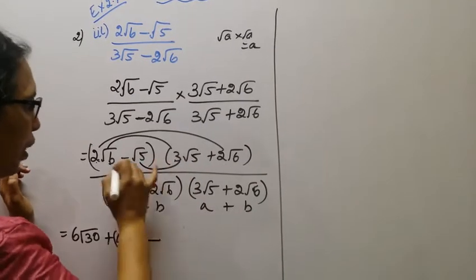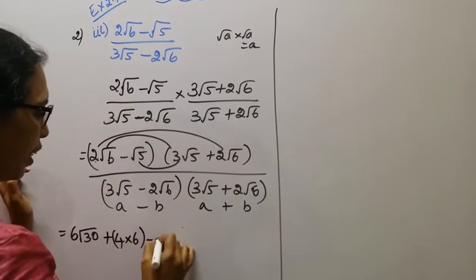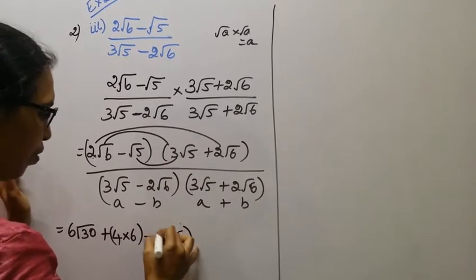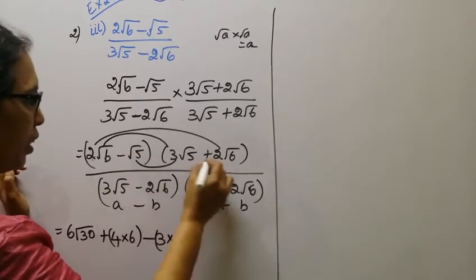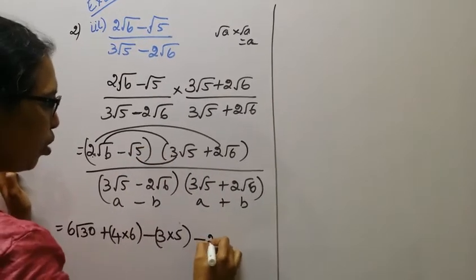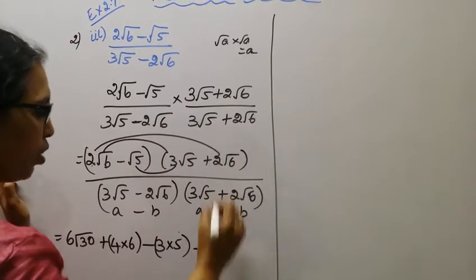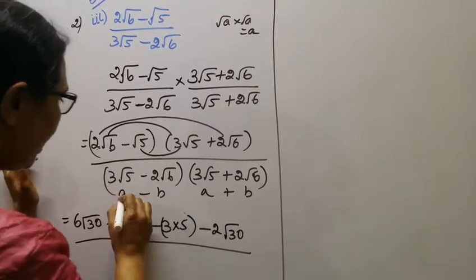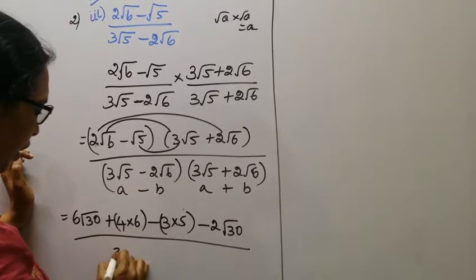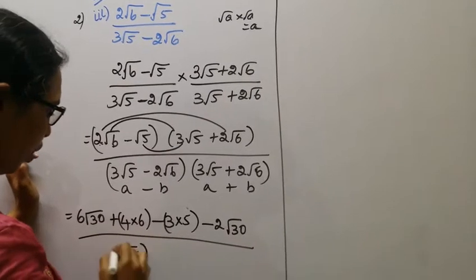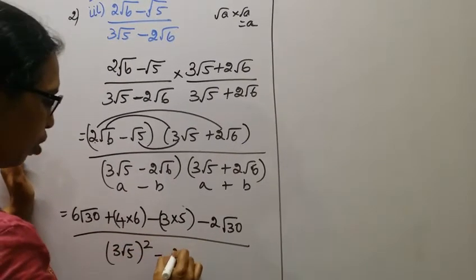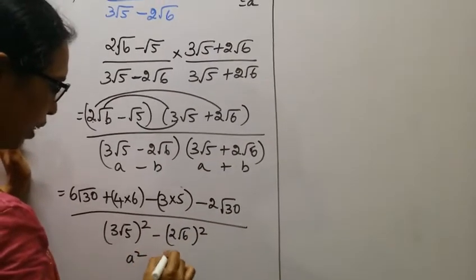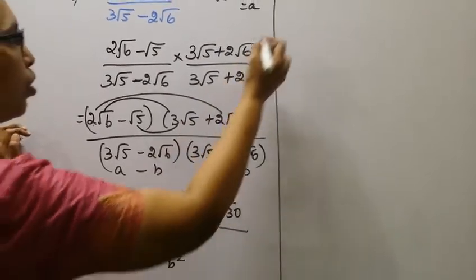Applying the signs: minus into plus gives minus. We have 1 times 3 for one term; root 5 into root 5 is 5. Minus into plus gives minus, 1 into 2 is 2. So the numerator has terms with root 5, root 6, and root 30. The denominator uses a squared minus b squared: 3 root 5 the whole square minus 2 root 6 the whole square.